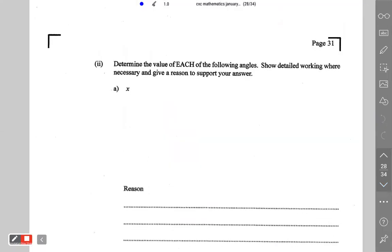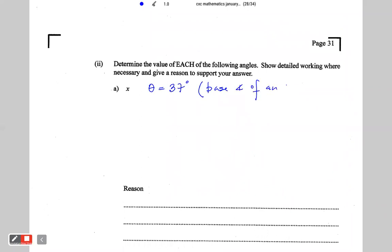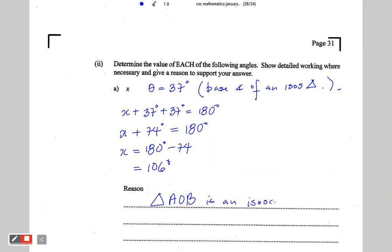So I would start out by saying that theta, the angle I put in, is equal to 37 degrees. It is the base angle of an isosceles triangle. Therefore, X plus 37 plus 37 would be equal to 180 degrees. X plus 74 would be equal to 180 degrees. X would be equal to 180 minus 74. X is 106 degrees. So the basic reason for my solution is that triangle AOB is an isosceles triangle.